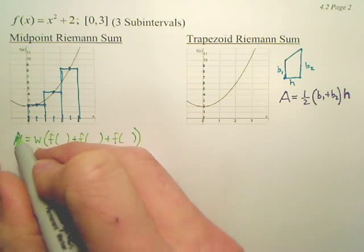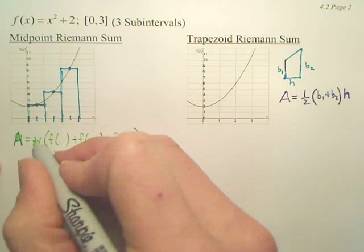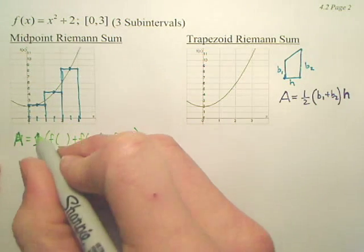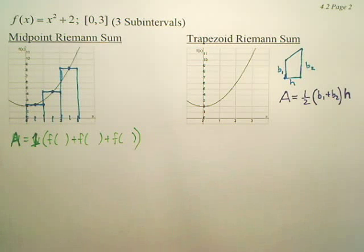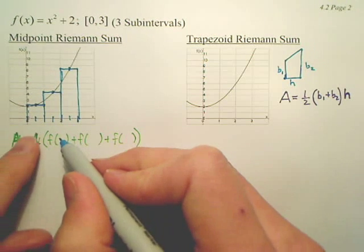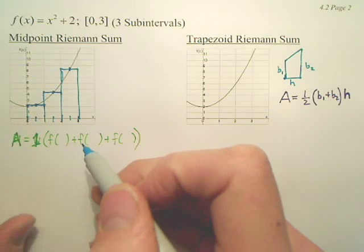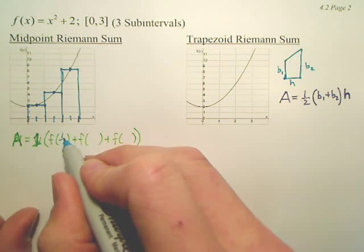What is the width? Well, isn't our width 1, so can I replace that w with a 1? The width is 1. Now, f of what? What did we plug in to get the height of that first rectangle? We plug in 1 half.